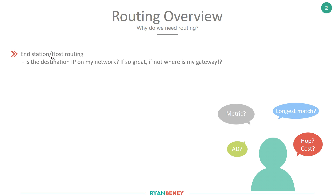First up: end station and host routing. This is something we did talk about when we discussed ARP, the Address Resolution Protocol. I'd highly recommend going back and ensuring that you understand ARP in detail before continuing with routing, but we will cover a basic overview in this video to ensure we're all on the same page before we move into routing.